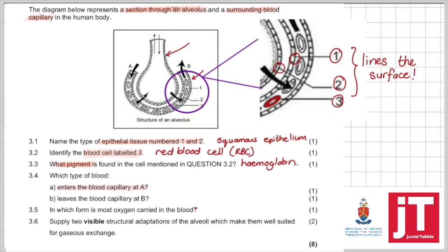Question 3.4, which type of blood enters the blood capillary at A? So by which type of blood, they're actually referring to is it oxygenated or deoxygenated? So we can assume that blood arriving at an alveoli would not have large or high concentrations of oxygen in it quite yet but rather have high concentrations of carbon dioxide.